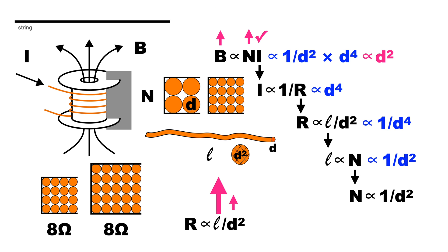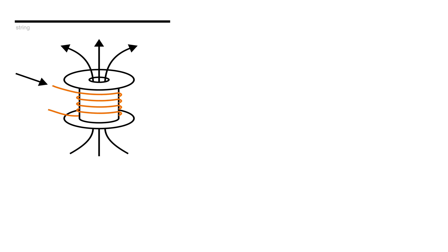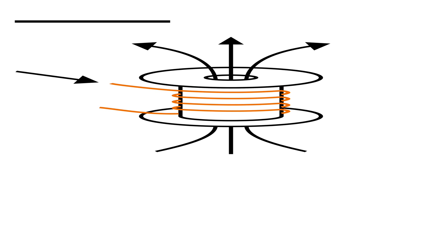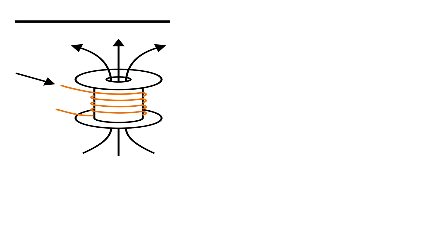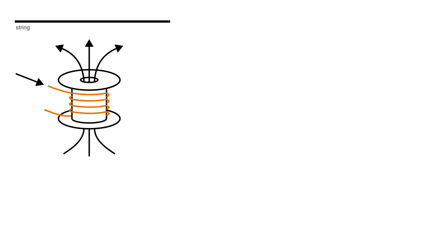Of course if your bobbin is too big then your magnetic field is going to be spread out all over the place. So what you really want is a bobbin that is small enough that it concentrates the magnetic field in the area where you want it and then as big as possible within that constraint so that you can maximize the number of turns of wire that you have on it.